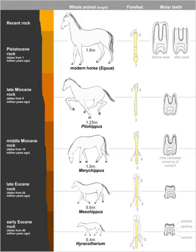Eohippus browsed on soft foliage and fruit, probably scampering between thickets in the mode of a modern muntjac. It had a small brain and possessed especially small frontal lobes. Its limbs were long relative to its body, already showing the beginnings of adaptations for running. However, all of the major leg bones were unfused, leaving the legs flexible and rotatable. Its wrist and hock joints were low to the ground. The forelimbs had developed five toes, of which four were equipped with small proto-hooves; the large fifth toe-thumb was off the ground. The hind limbs had small hooves on three out of the five toes, while the vestigial first and fifth toes did not touch the ground.